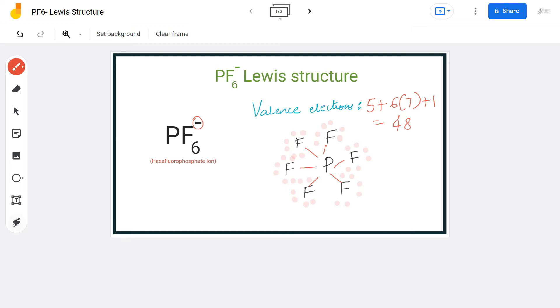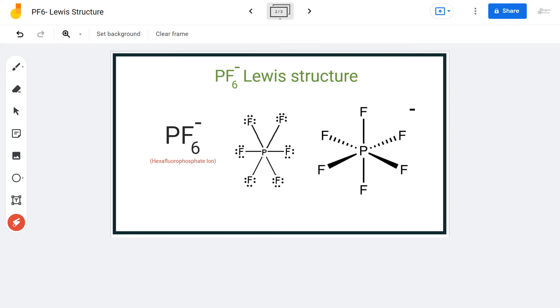Now you might ask, how can phosphorous atom have 12 valence electrons in its outer shell? The thing is, it is an exception to the octet rule and it can have an expanded octet. That is the reason it can hold more than eight valence electrons in its outer shell.